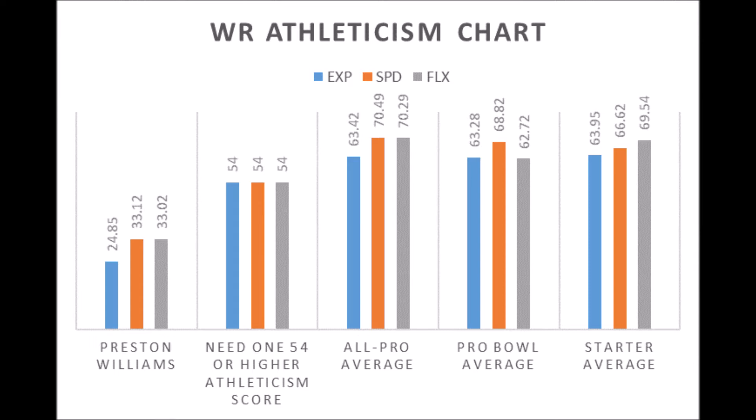When it comes to wide receivers with All-Pro potential, you need to have a 54 or higher athleticism score, which is where the majority of players land. Chad Johnson and Jarvis Landry are really the only two wide receivers since 1999 to not hit a 54 or higher athleticism score and still go on to have three-time Pro Bowl or three-time All-Pro careers. So in order for Williams to be a special player, he will have to be an outlier based on his athleticism data.